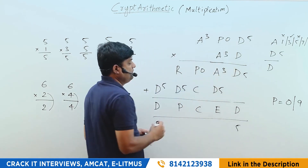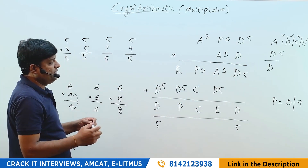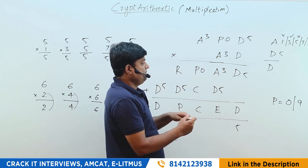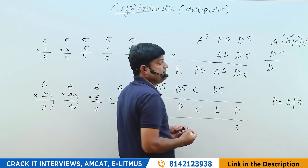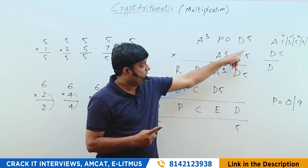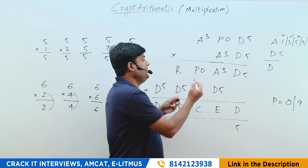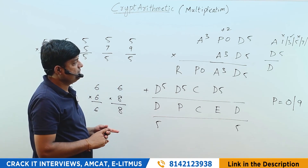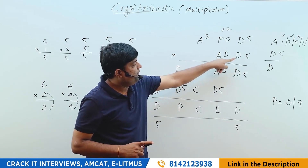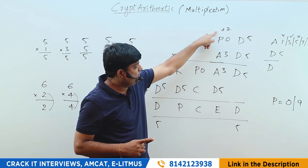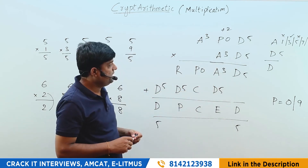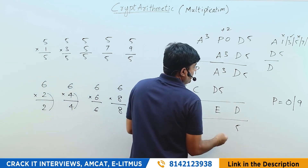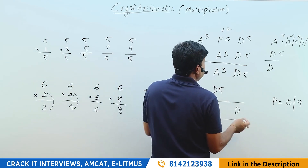With A=3 and P=0: 5×5=25, write 5 carry 2. Then 5×0=0, plus carry 2 equals 3 — but this position should match and it does not work out. So P cannot be 0. Therefore P must be 9.